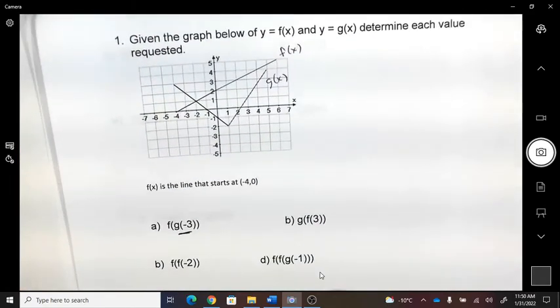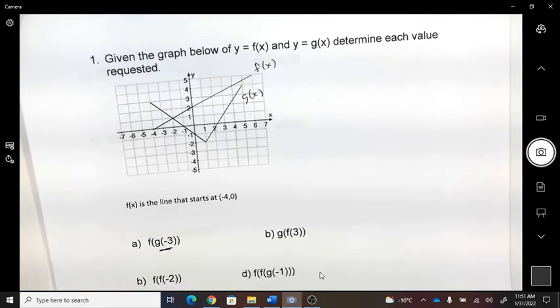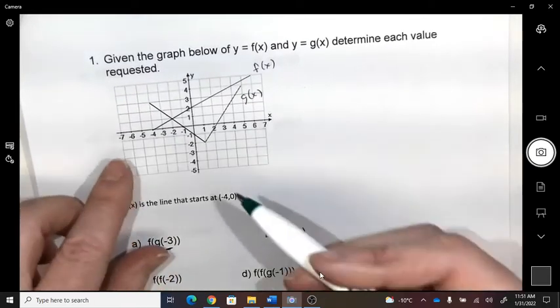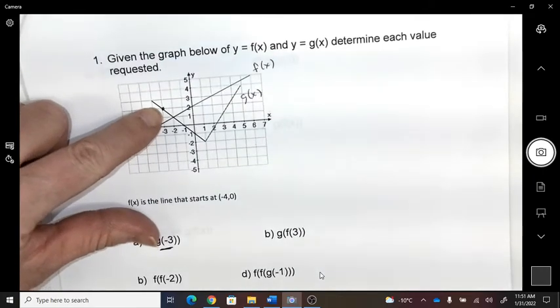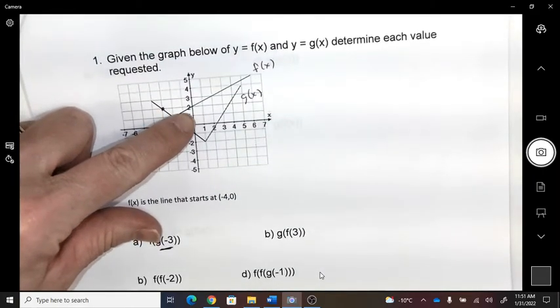it says that the f is the line. So there we go, we got them labeled. So g at negative three would be right there. So it's an output of two.